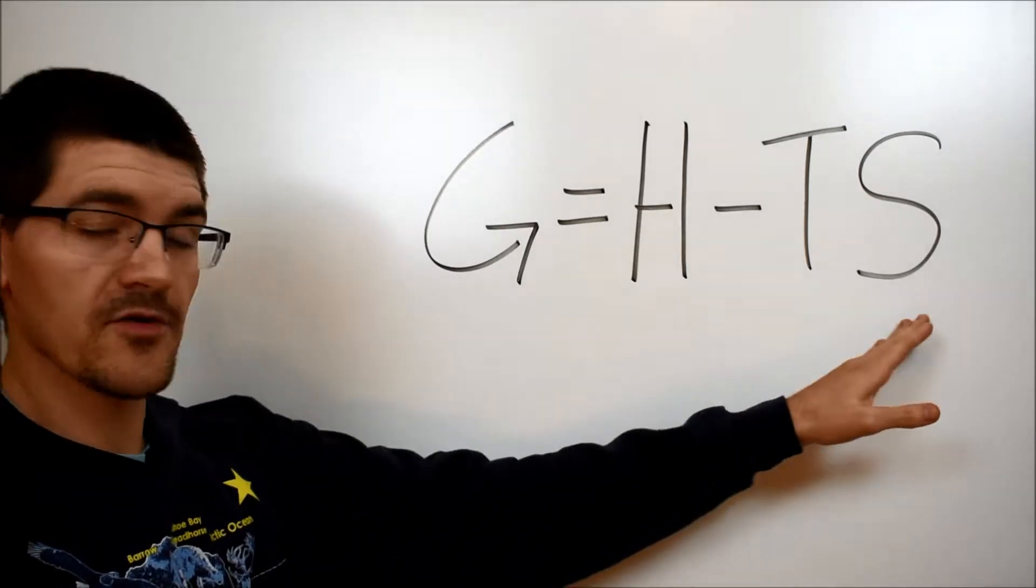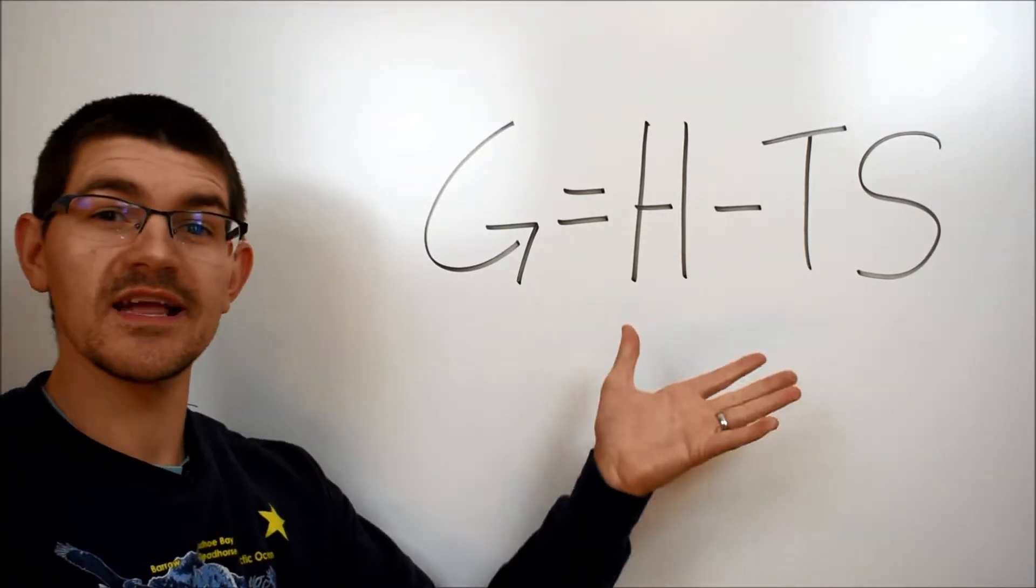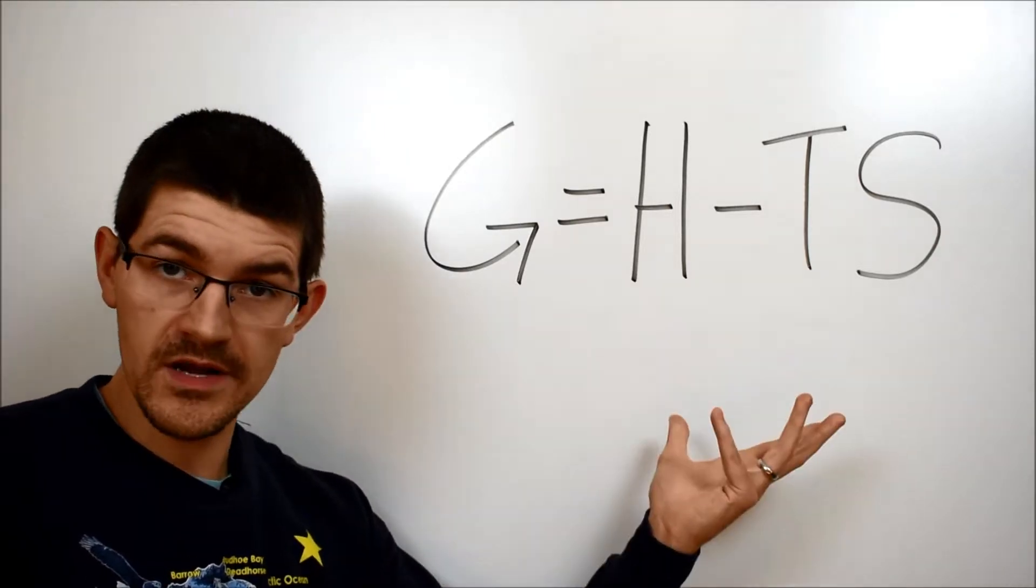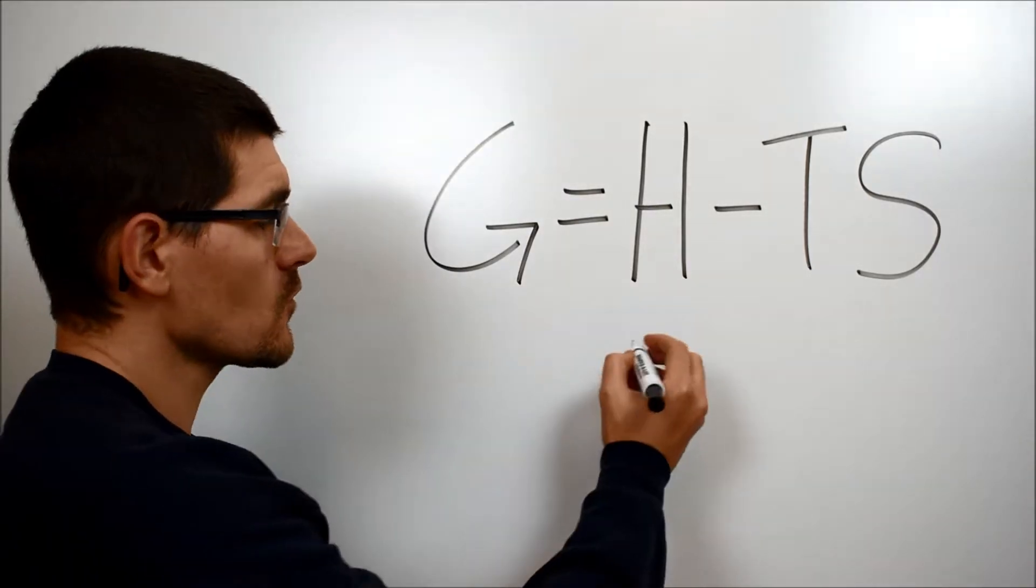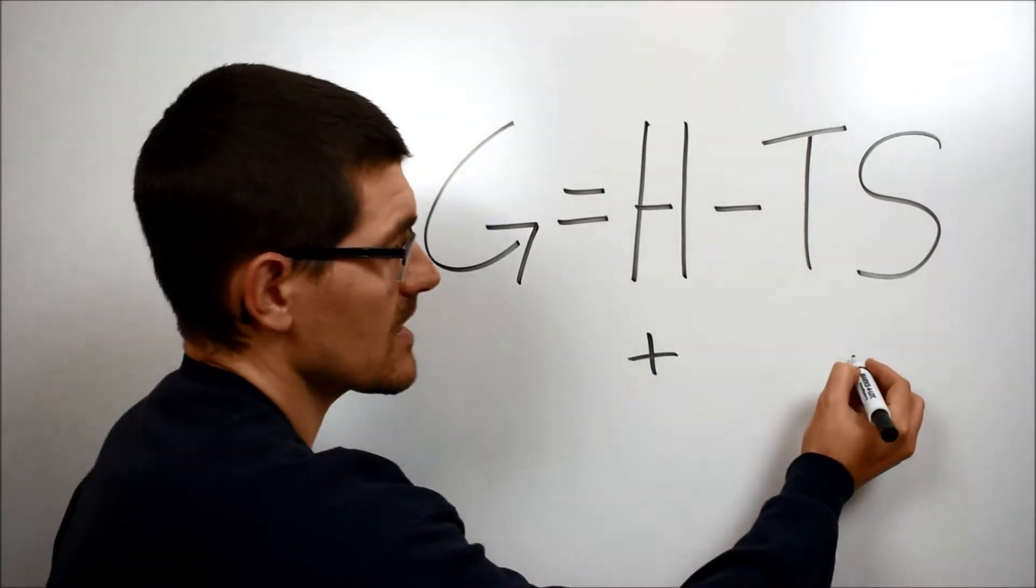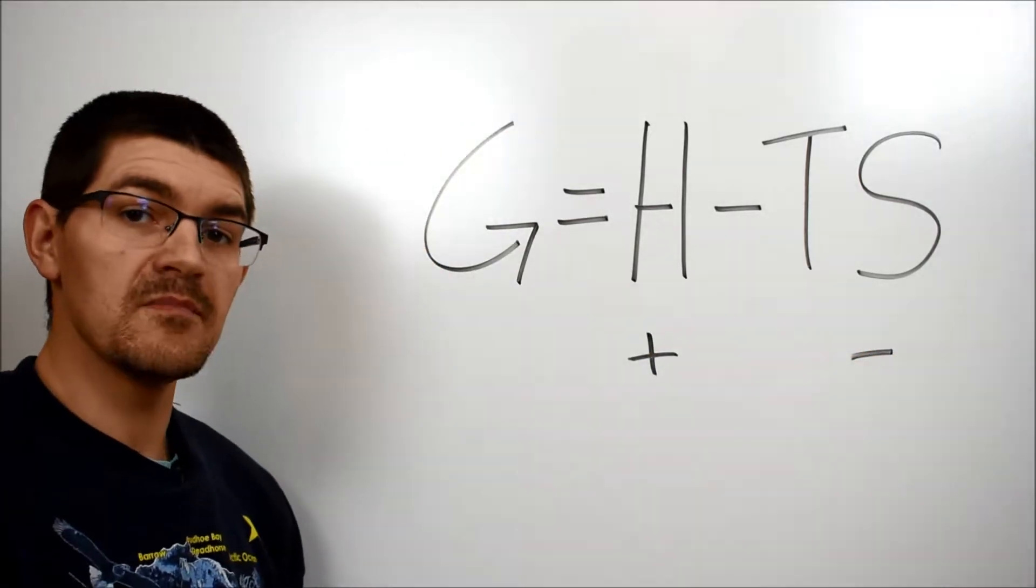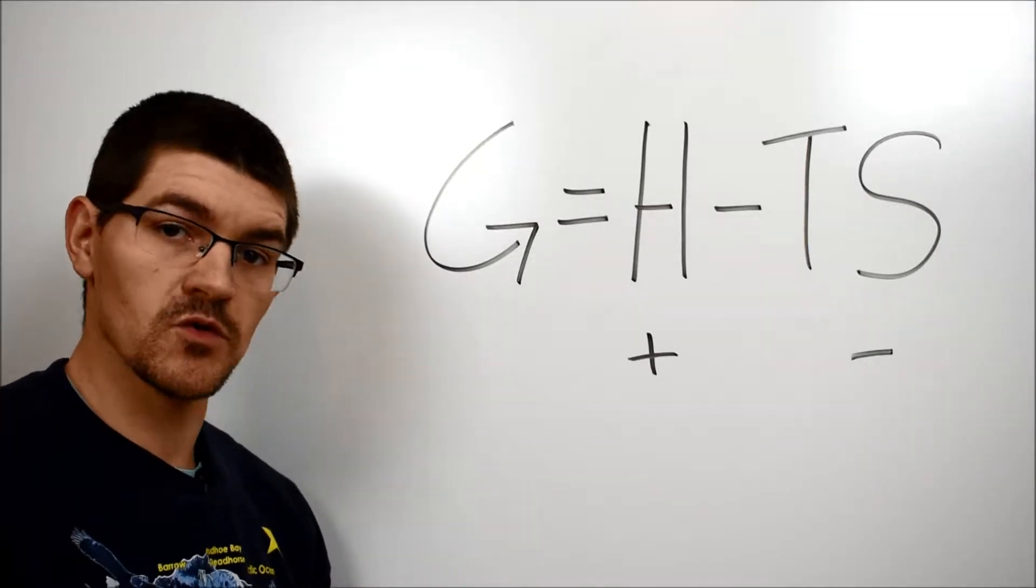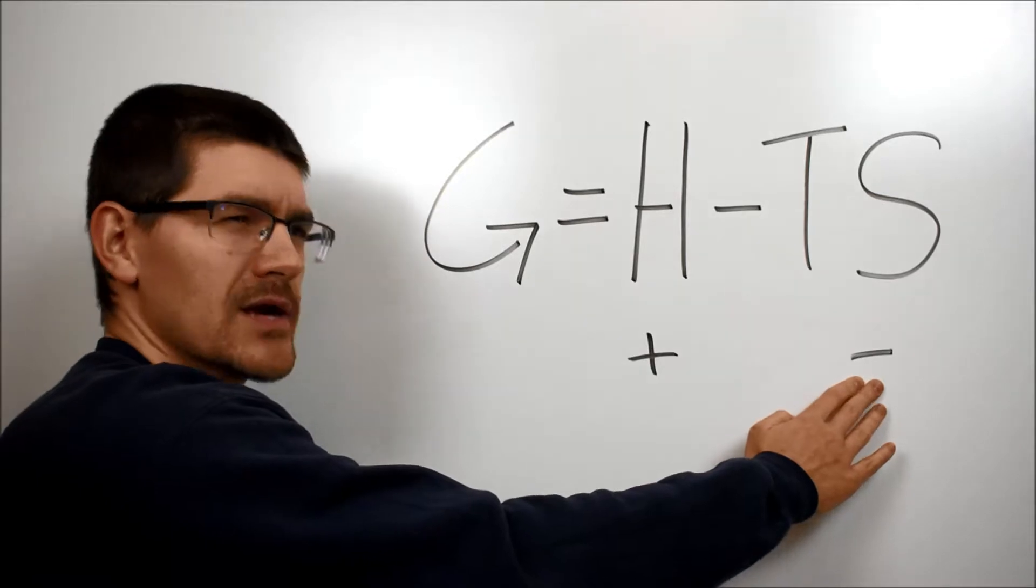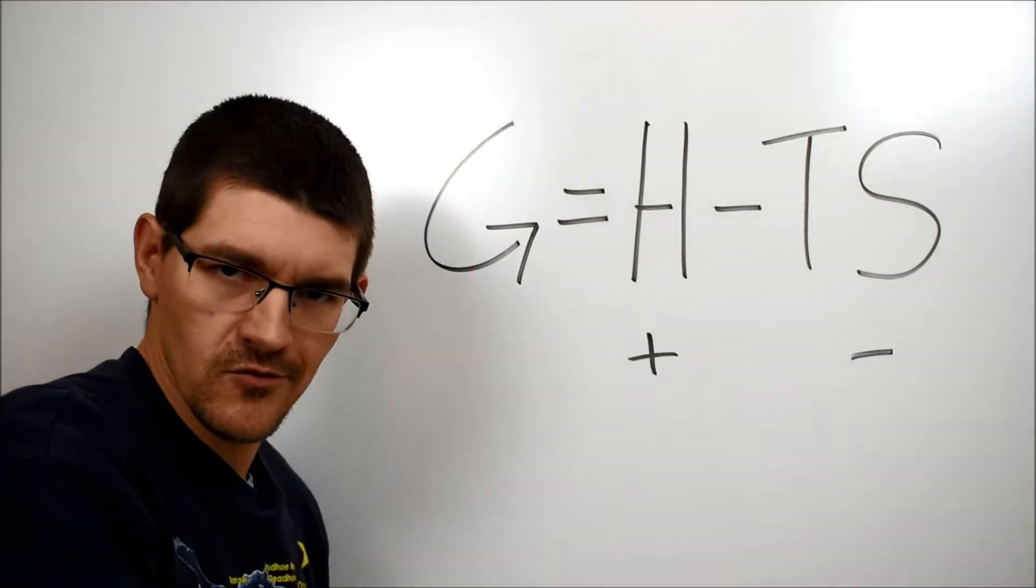With the numbers of the enthalpy and the entropy just looking at the signs here there are four scenarios we can look at, positive or negative for each of them. There are two that are really easy. If your enthalpy is positive meaning you have an endothermic process and your entropy is negative meaning you have a decrease in disorder, increase in order, so we have an endothermic order increasing, disorder decreasing process.